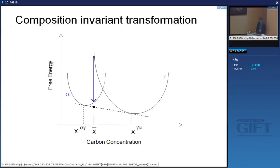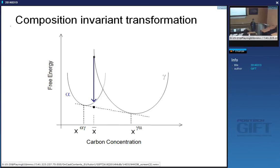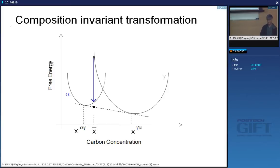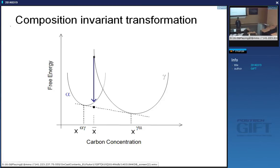T0 is just a thermodynamic condition. Below T0 you could get diffusional transformation, but T0 simply defines the composition above which it is impossible to get diffusionless transformation. It has nothing to do with diffusion — it is pure thermodynamics with no time involved. It simply defines the boundary beyond which diffusionless transformation is impossible. Both diffusional and displacive transformation can happen below T0, while diffusional transformation can happen at any temperature below A3.